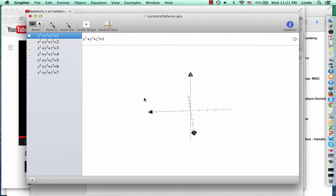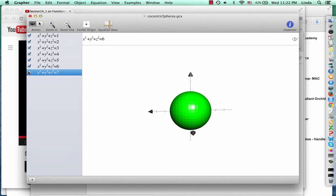Here are the level surfaces for the first function. And as you can see, they're concentric spheres. So this function is a higher dimensional analog of a paraboloid.